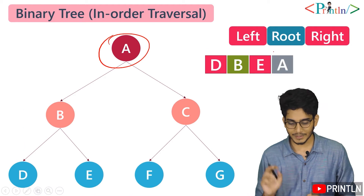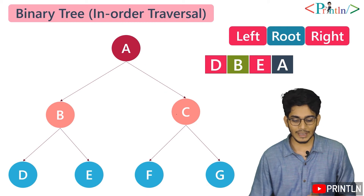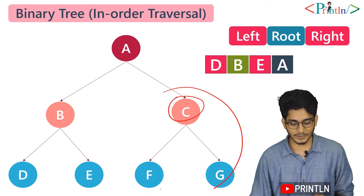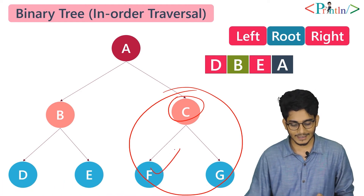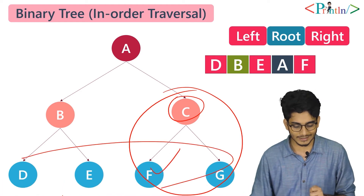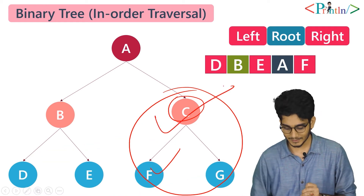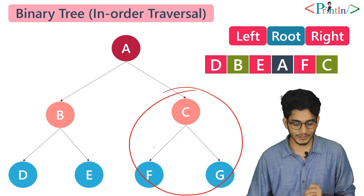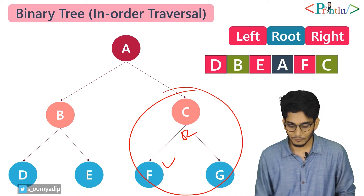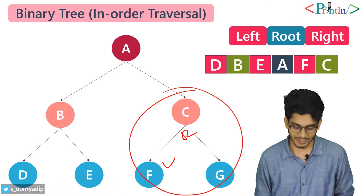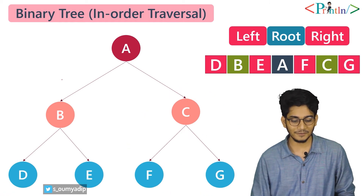Now we will print the root, so we will print A. Now we will go for the right subtree. In the right subtree we have C. For this tree as well, at first we will start traversing from the left. What is the left C has? It has F. We will print F. F and its child nodes don't have any values. Then what we will do? We will print C. Now we have successfully traversed left and root. Then we will go for the right, so we will just print G. So it will be our in-order traversal for this tree.